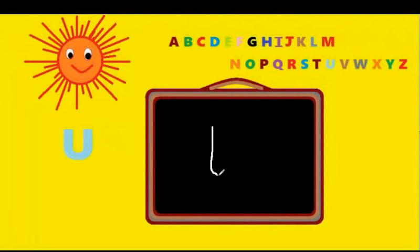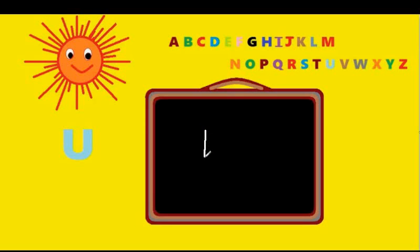U. You have to draw a standing line, and the same line comes up. Draw another standing line and join it from the bottom. That's U. U is for umbrella.